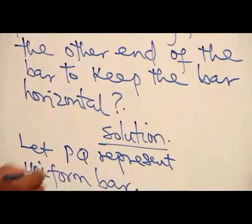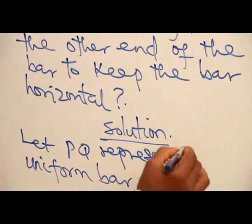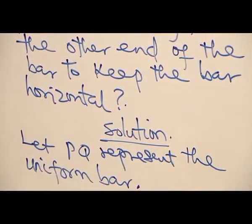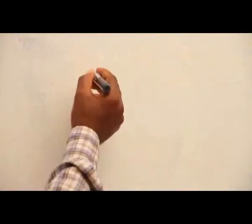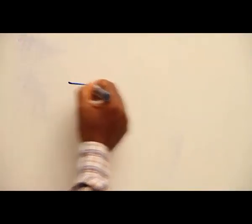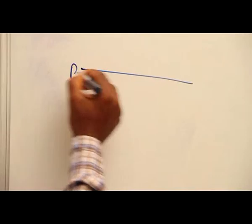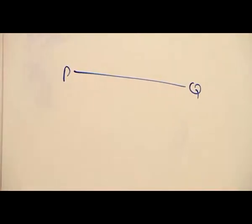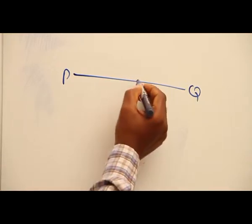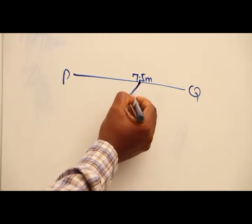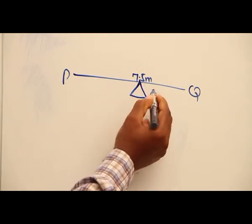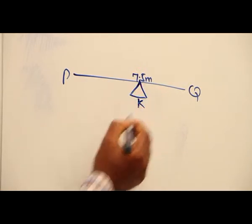Let PQ represent the uniform bar. So we have PQ. The center of gravity, because it's uniform, would be at the 7.5 meter mark. We have our pivot. I'll use letter K to represent it.